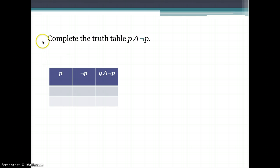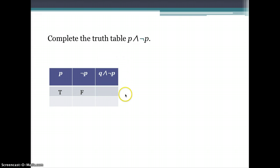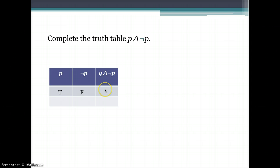Here's another sample problem you may encounter on a test: complete the truth table for P and not-P. If the first proposition P is true, we negate it to get false. From the conjunction truth table, when P is true and the second proposition is false, P and not-P is false.